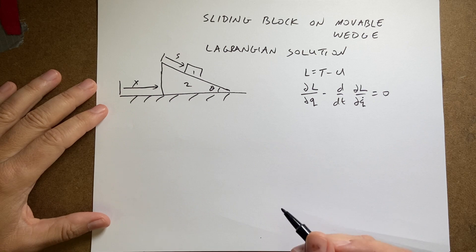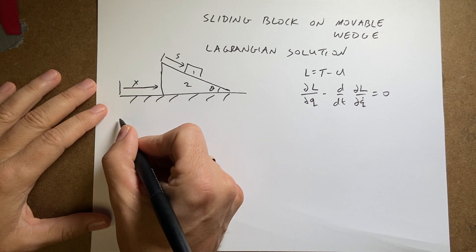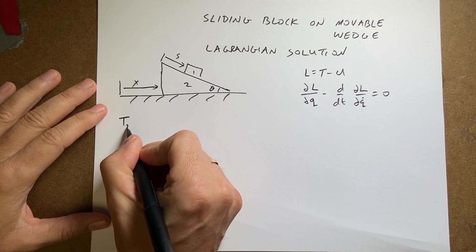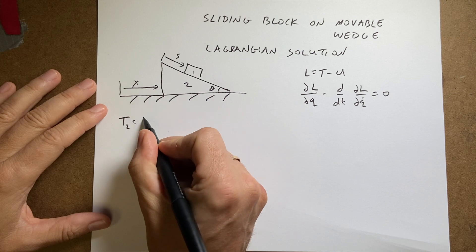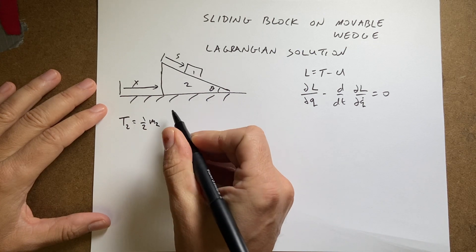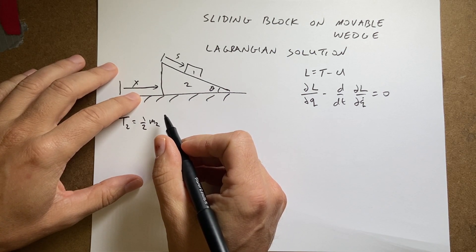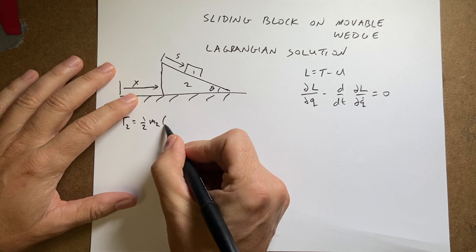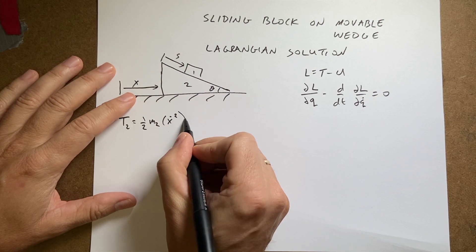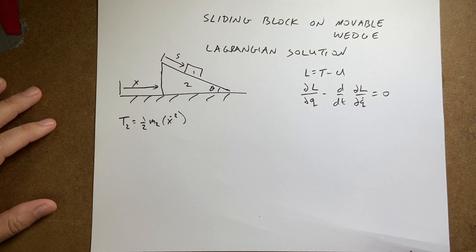Now let's write down the kinetic energy, starting with mass 2. T2 is going to be one-half m2 times its x-velocity squared, which is just ẋ². It's not moving in the y direction, so that's all.